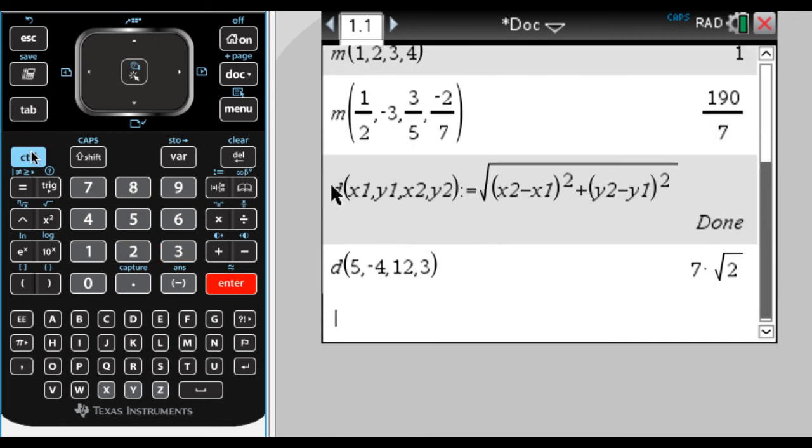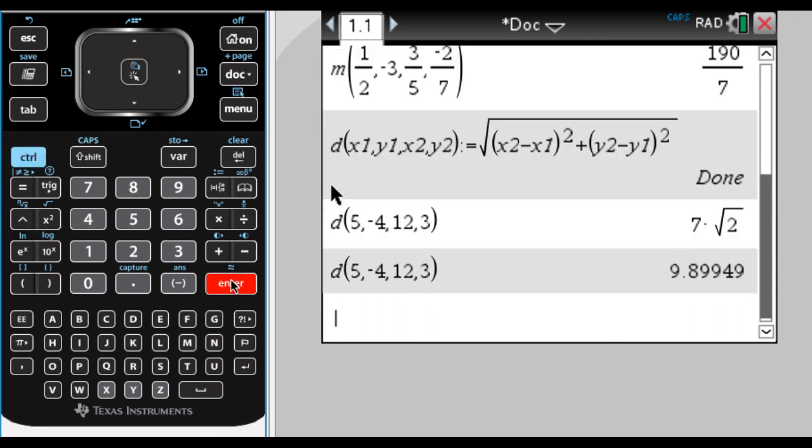If I want an approximate value, I would press control, enter. And it gives me a decimal. And now I can find the distance between any two points. And it's pretty useful because I can use that to solve harder problems, or it just speeds things up for me. But anyway, that's a way that you can use your inspire to define functions and speed things up for you, and make sure you're not making mistakes over and over.